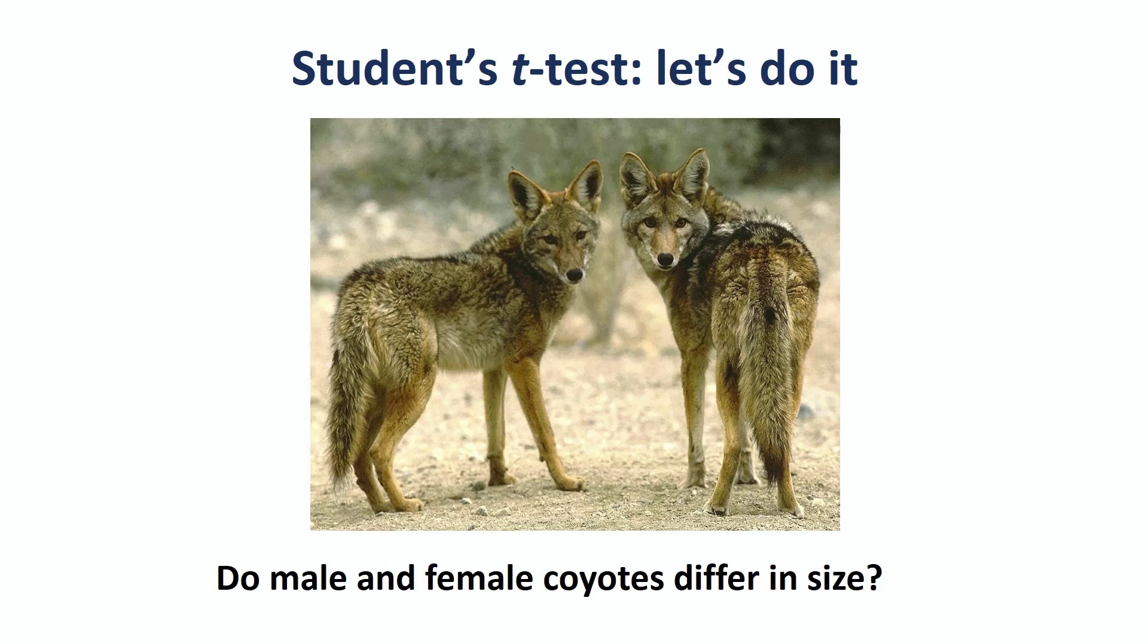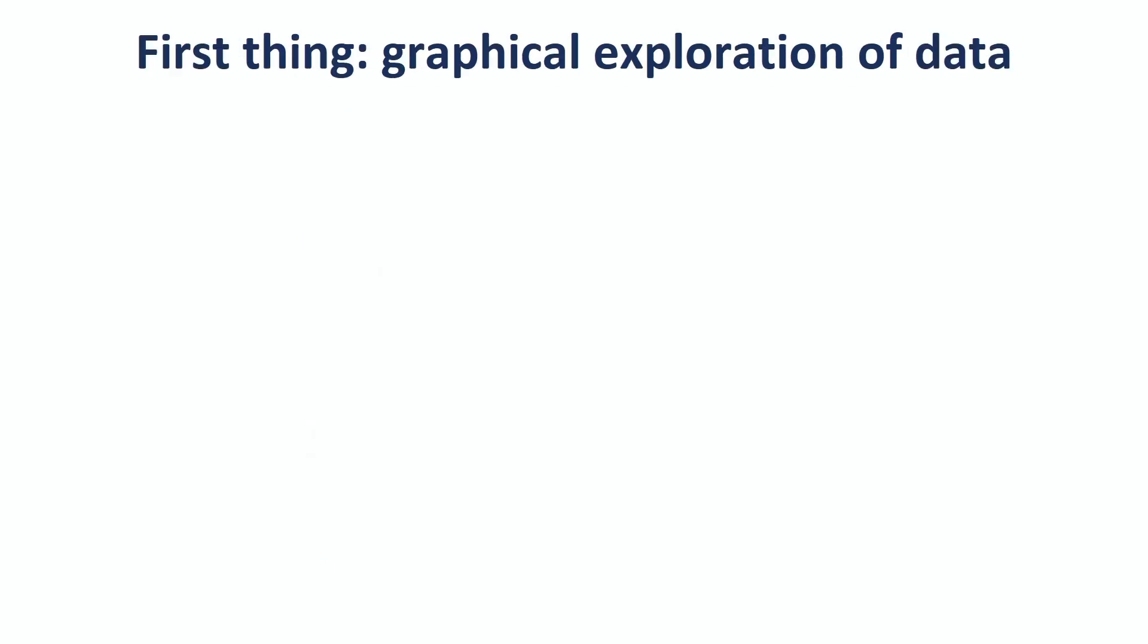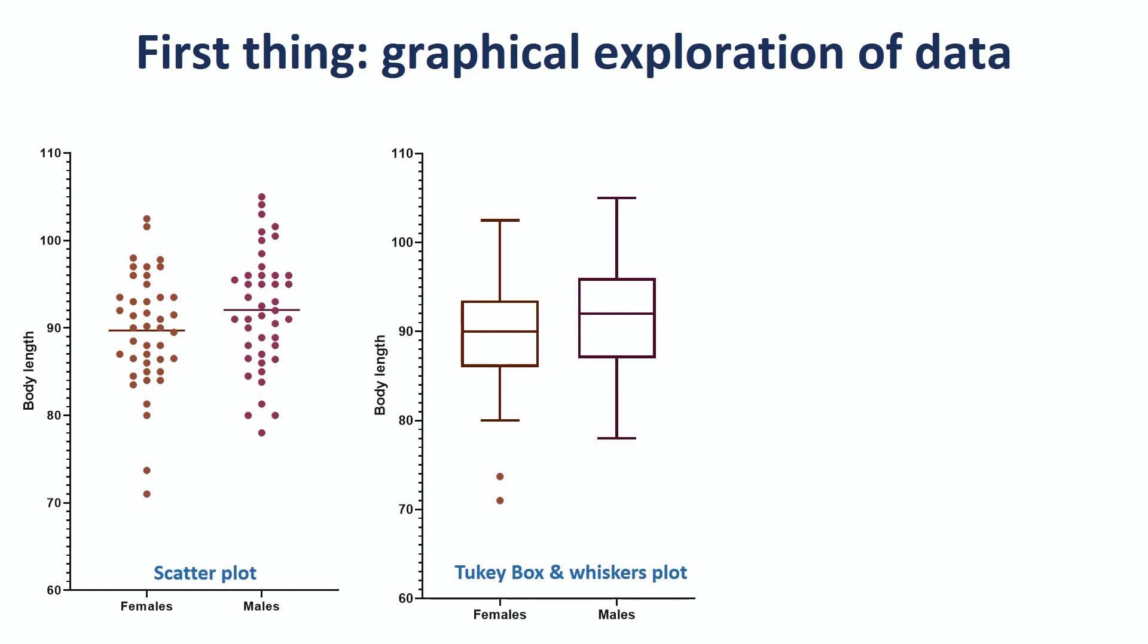Now, before doing any stats, the first thing is always to get to know our data, to explore them. There are three graphical representations which are super informative when it comes to data exploration. Scatter plots, which tell us about symmetry and homogeneity of variance, but also allow for the identification of outliers. By the way, we should never be too hasty and throw away outliers. And once more, I explain more in the video on data exploration.